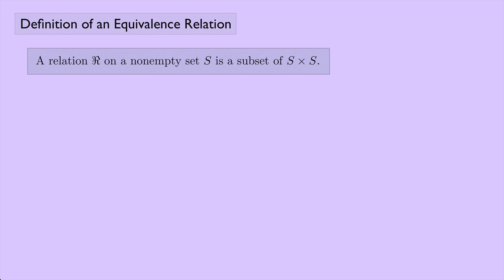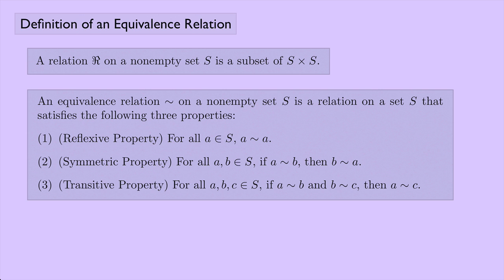A relation on a non-empty set S is a subset of the Cartesian product of S with itself. An equivalence relation — I'll use a tilde to represent it — on a non-empty set S is a relation that satisfies three properties. They're in alphabetical order: R, S, T, making them easy to remember. First, the reflexive property: for any element A in S, A is equivalent to A.